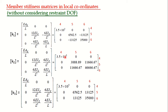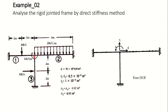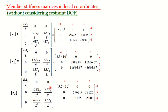For member 3, again at the support end the displacement has been arrested, so those rows and columns are eliminated at this stage. We only refer to coordinates 4, 5, 6 in any member. With respect to that, the element stiffness matrices K₁, K₂, and K₃ in local coordinates have been written — all three correspond to the element stiffness matrix in local coordinates.